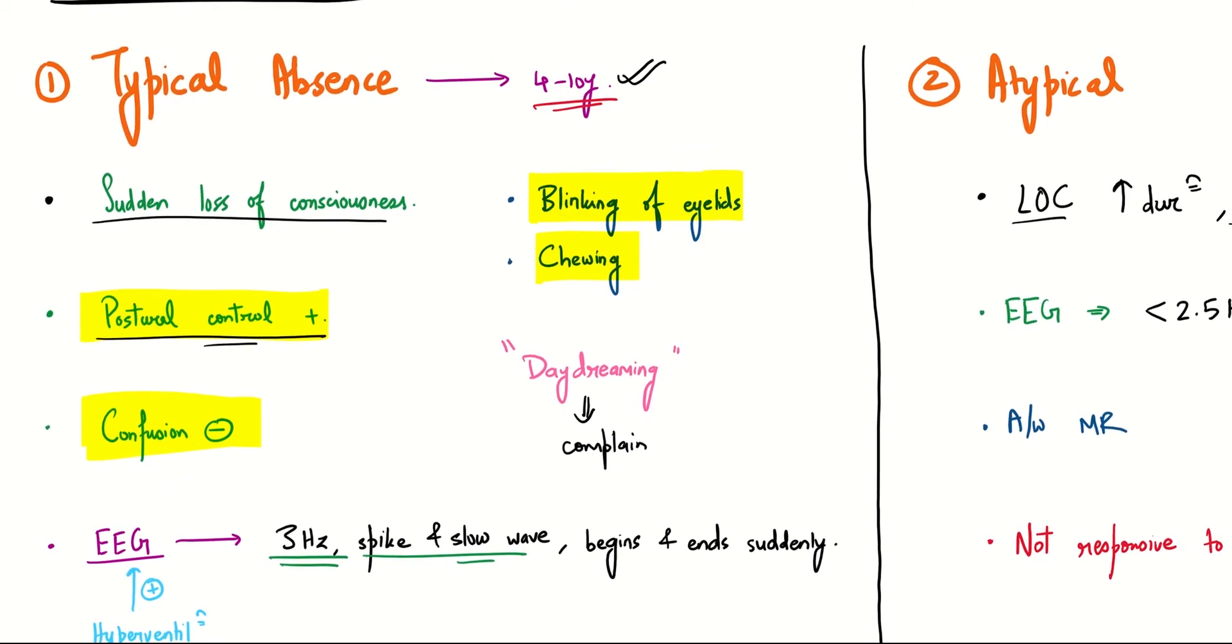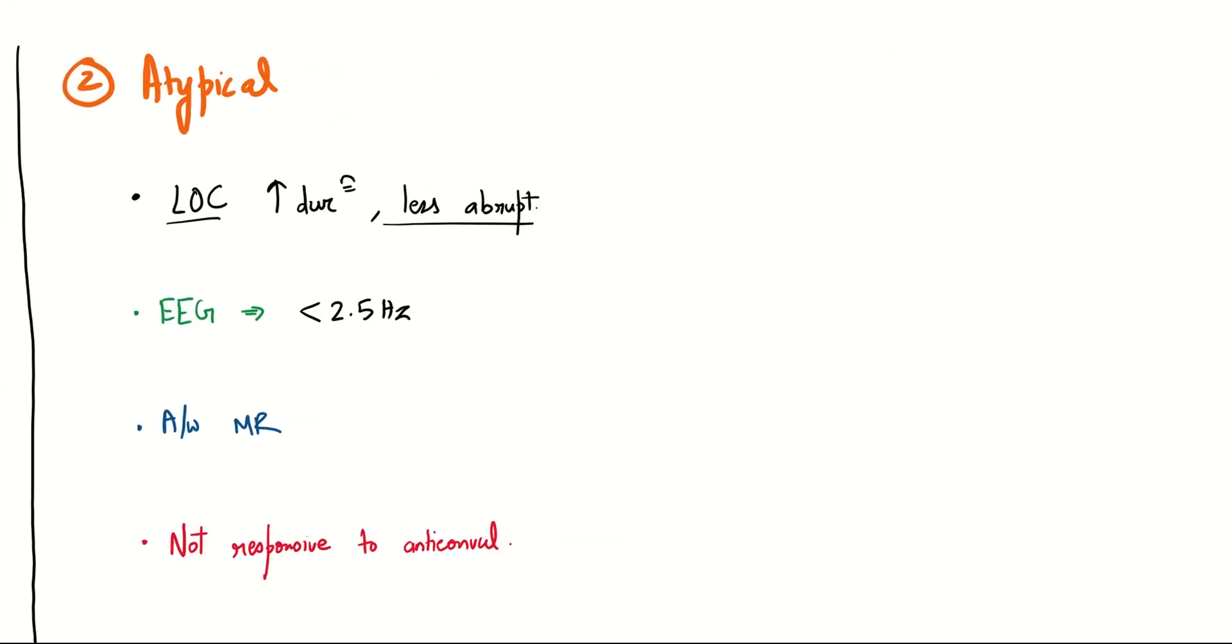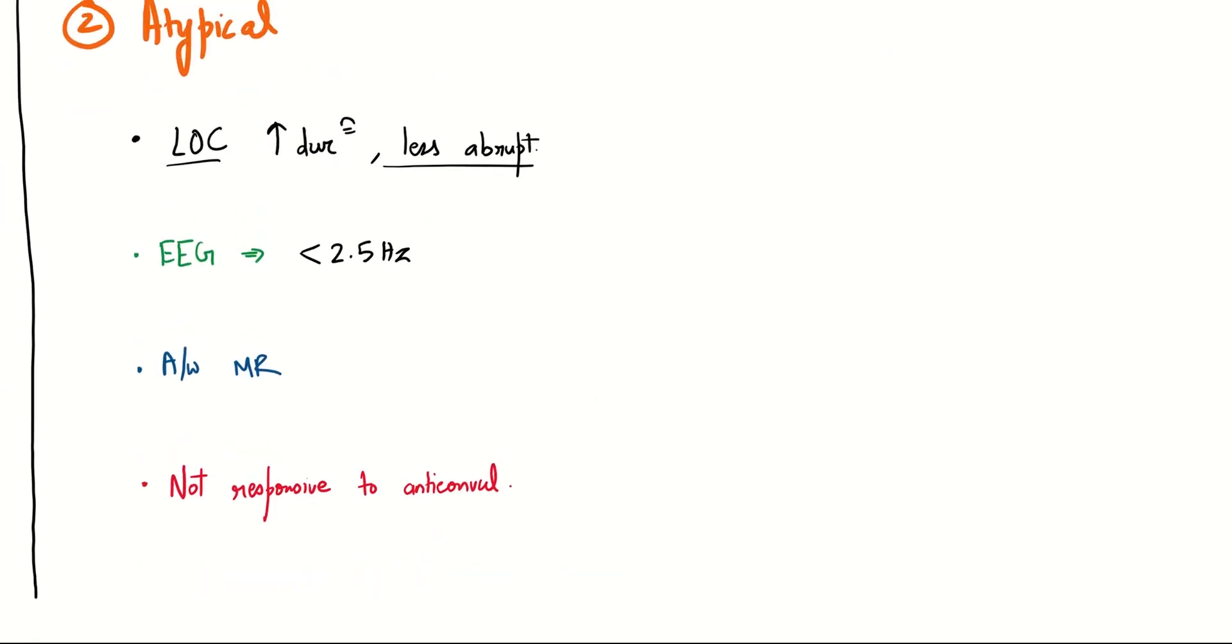In atypical absence seizure, the EEG will have a frequency of less than 2.5 Hz, which helps us differentiate it from typical absence seizure. It will be associated with mental retardation. If you try to treat atypical absence seizure with the medication for typical absence seizure, it will not respond, so that is another important differentiating factor.